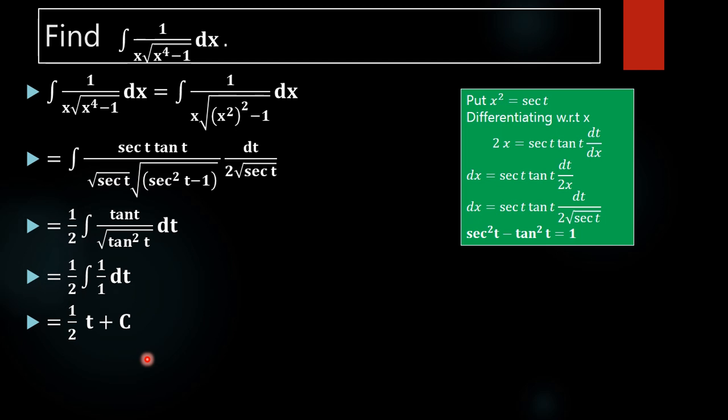But we need our answer in terms of x, so we need to back-substitute using the relation x squared equals sec(t).